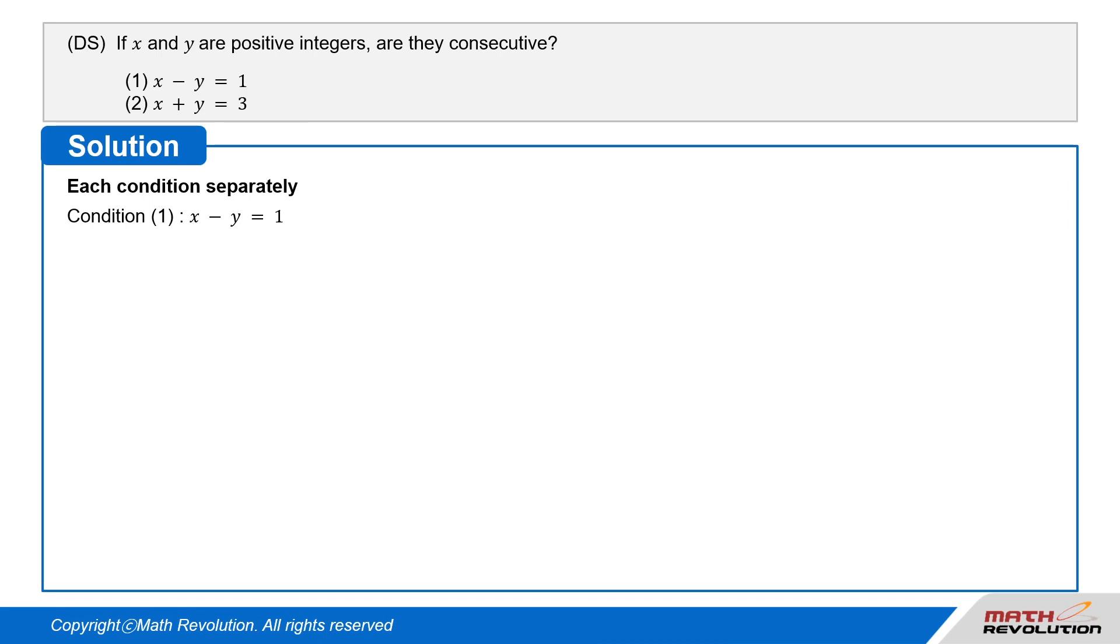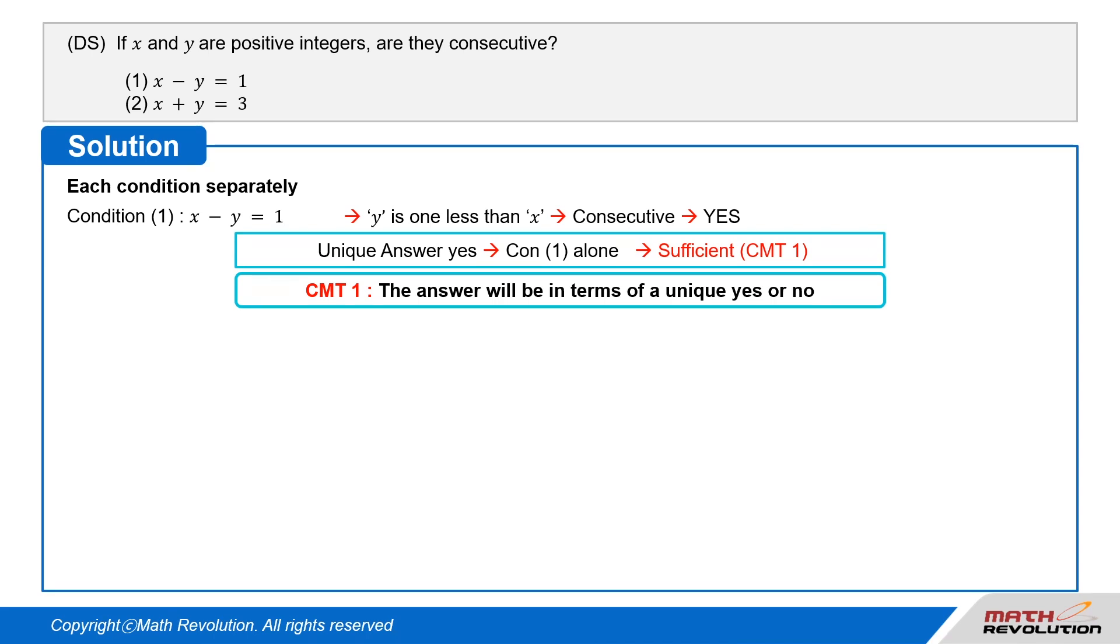Condition 1 tells us that x minus y equals 1. This tells us that y is 1 less than x, which means that they are consecutive. So, the condition is sufficient according to CMT1, which means that the answer will be in terms of a unique yes or no.